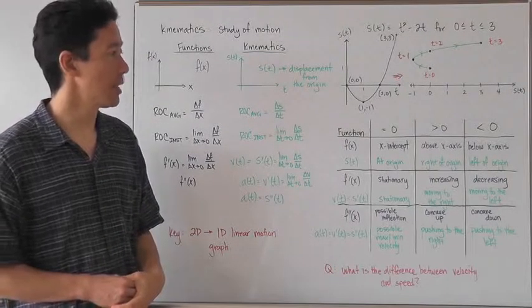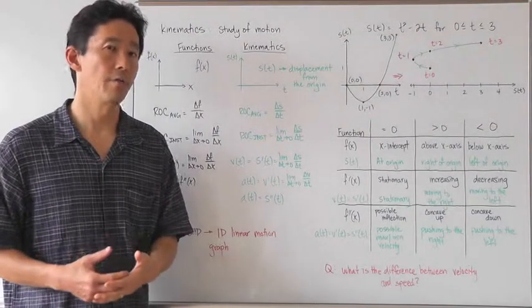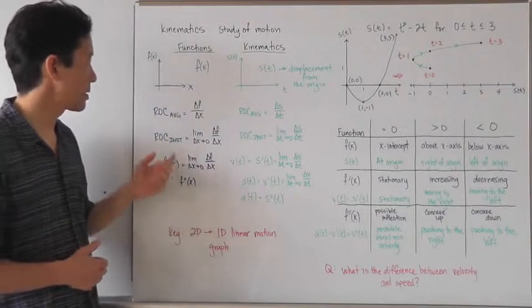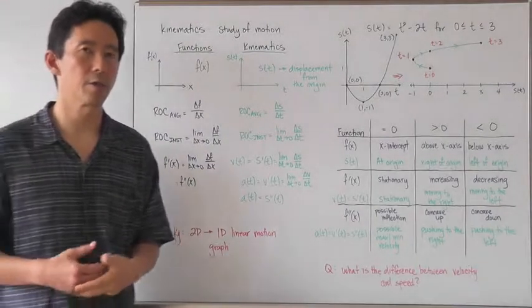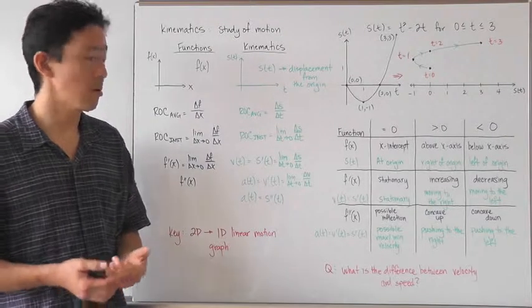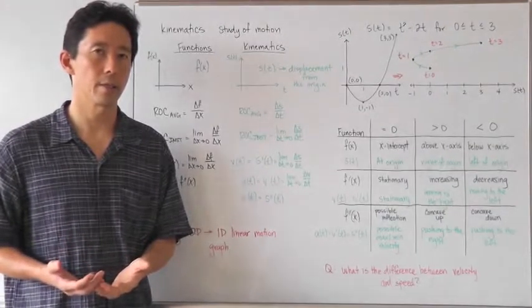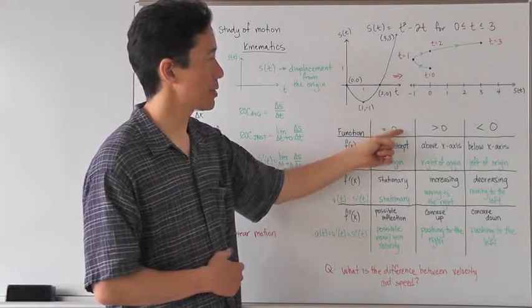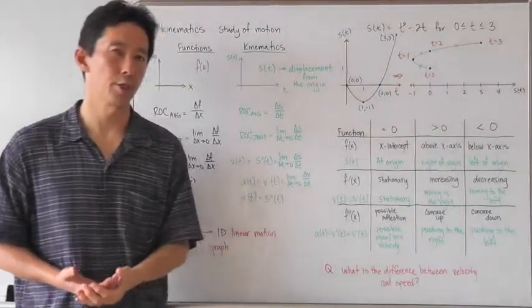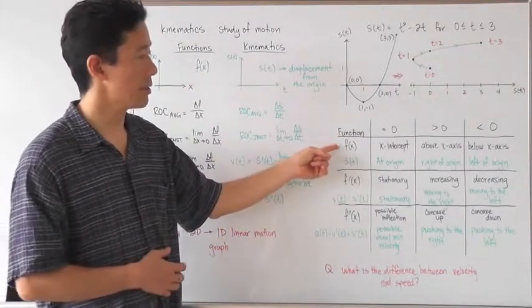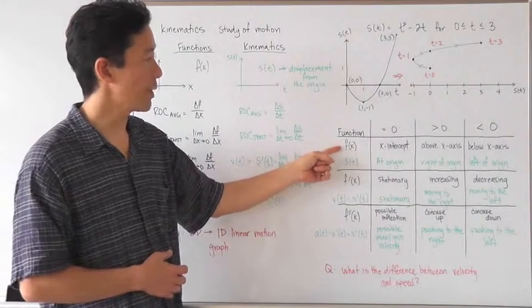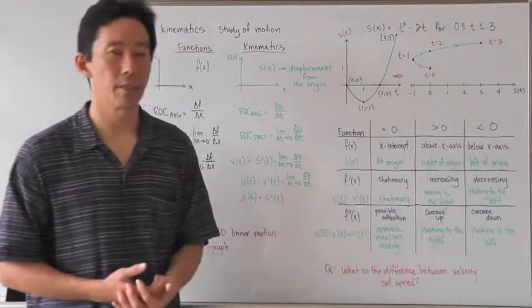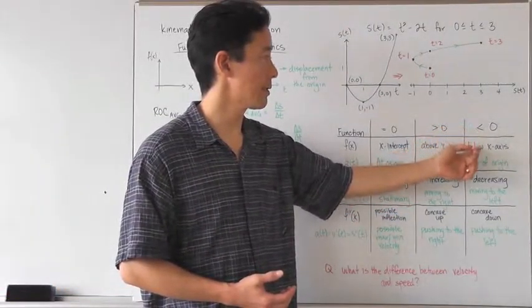Now let's make sure we understand the interpretation of the various functions. When we talk about functions in our functional analysis, we talk about the first and second derivative and how they are interpreted as the behavior of the original function. We also want to do the same thing with our kinematic displacement function. If f of x equals 0, we're dealing with an x-intercept. If f of x is greater than 0, the point is above the x-axis, and if it's less than 0, then it's below the x-axis.